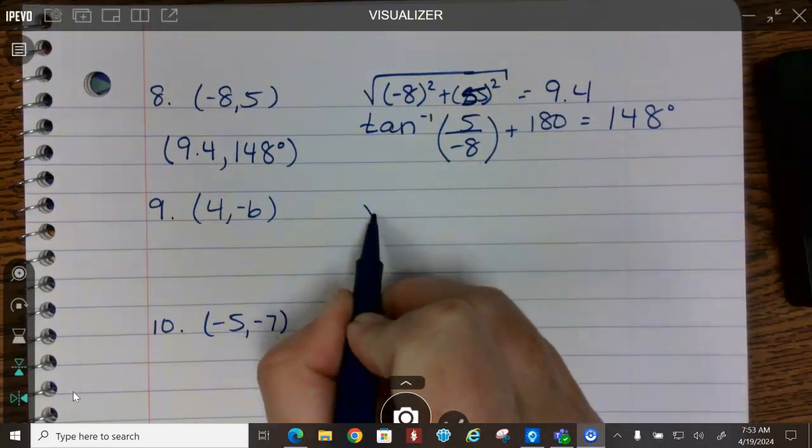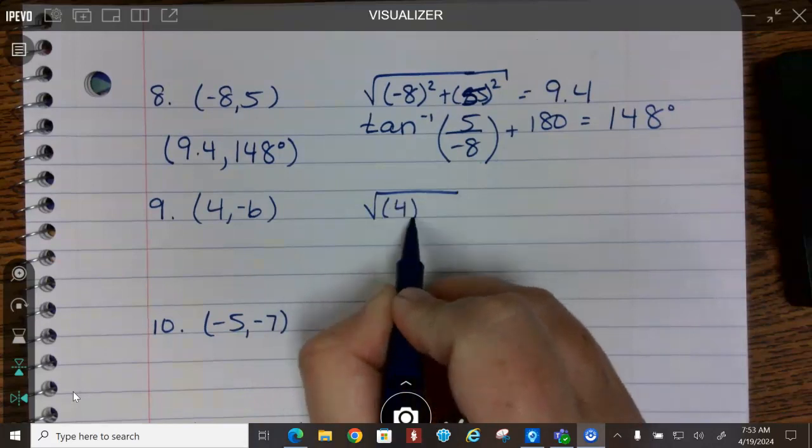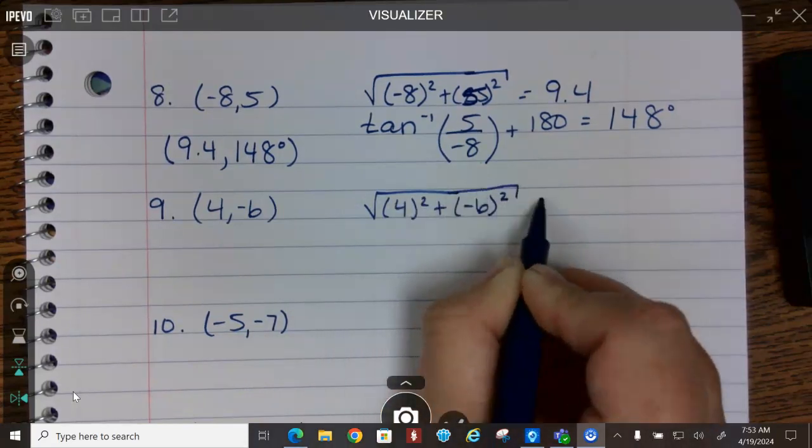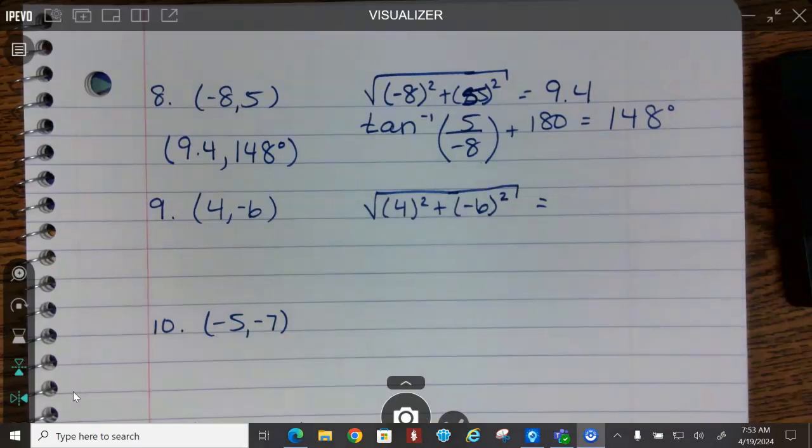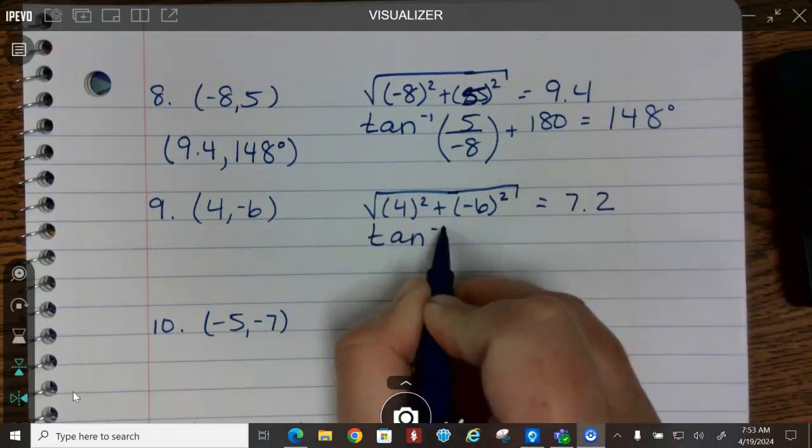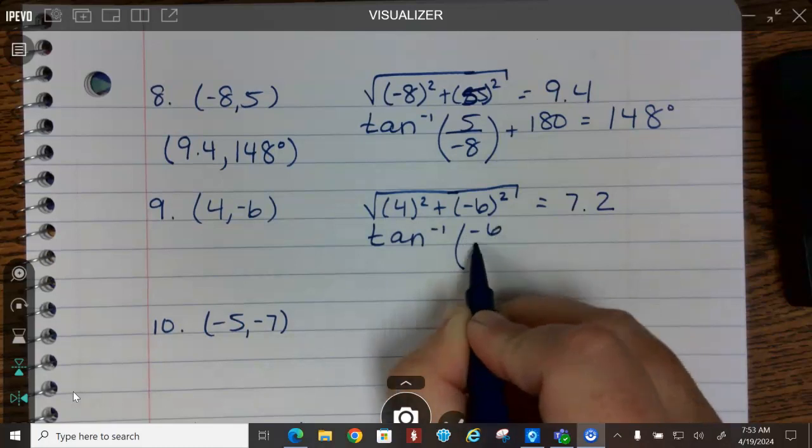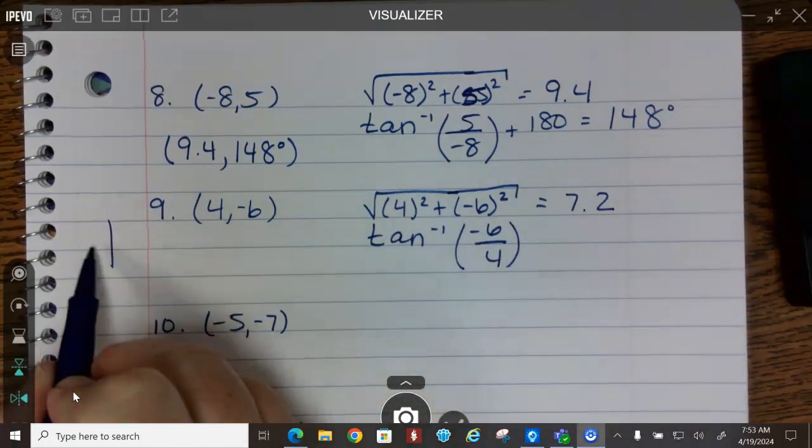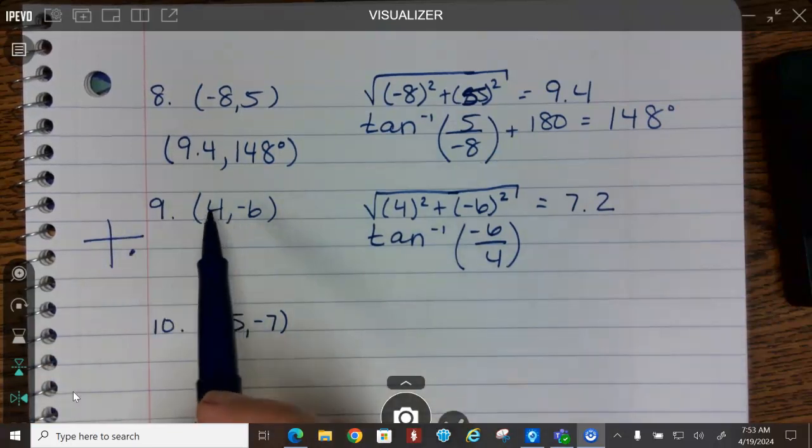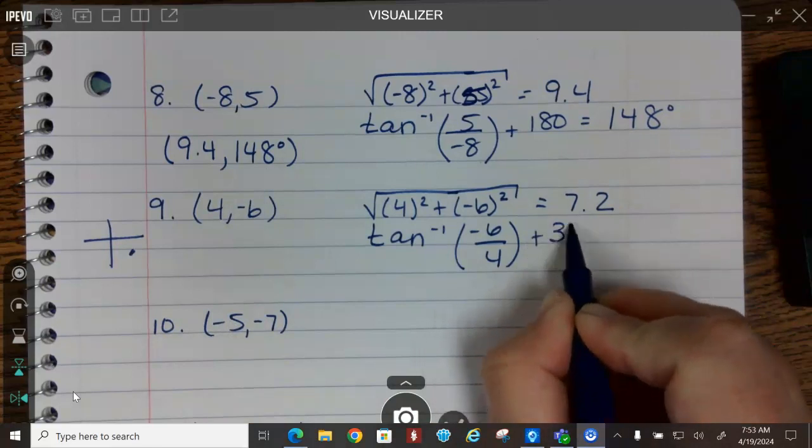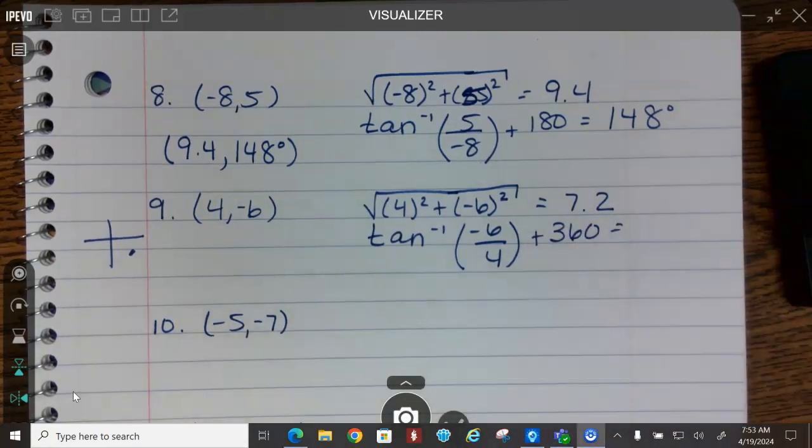We're going to do this again. Square root of 4 squared plus negative 6 squared. We get 7.2. And again, inverse tangent. Now this one you want to be very careful with.